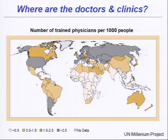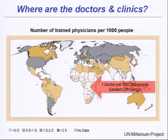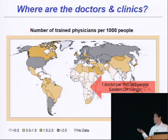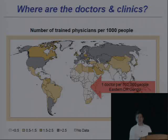But that takes a lot of infrastructure — both that expertise and those expensive microscopes. The thing about malaria is that it doesn't tend to overlap with where that infrastructure exists. Here's a map borrowed from the UN Millennium Project showing the global distribution of physicians. Per 1,000 people in the U.S., Europe, and Russia, we have over 2.5 doctors per 1,000 people. But in a lot of places, especially Central Africa, there are quite a bit fewer. In Eastern Democratic Republic of Congo, where I was working, there are about one doctor per 160,000 people, which is pretty staggering.